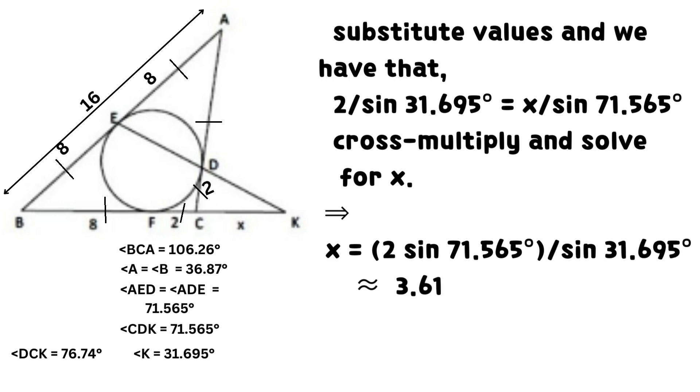Cross multiply and solve for x. It implies that x equals the product of 2 and sine 71.565 degrees divided by sine 31.695 degrees which is approximately 3.61129 to 5 decimal places. Therefore, x equals 3.61 units to 2 decimal places.